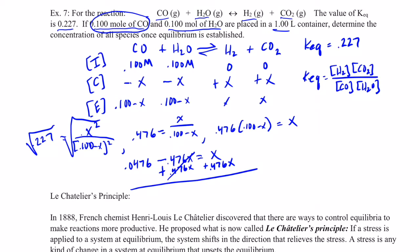And we'll get rid of that. And we end up with 0.0476 equals 1.476x. And we'll divide both sides by 1.476, and we'll end up solving for x.